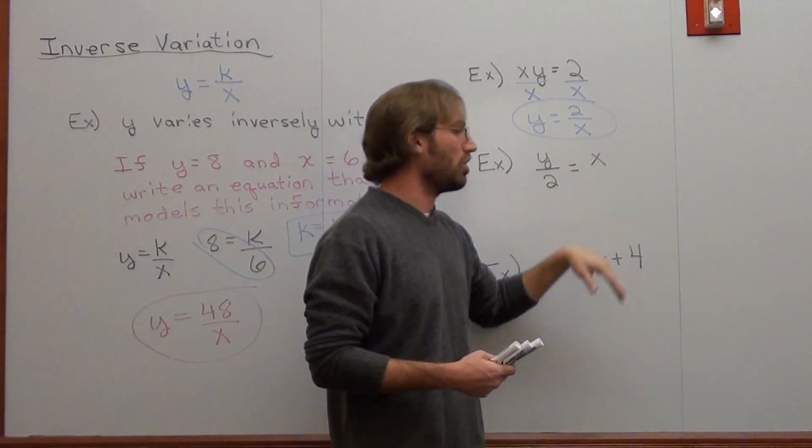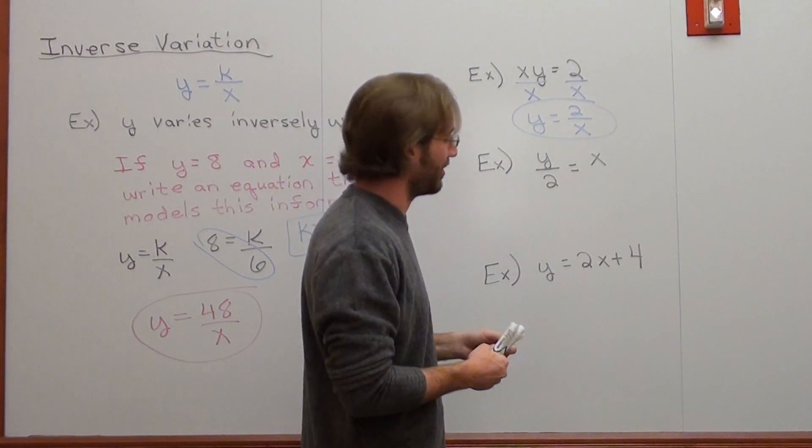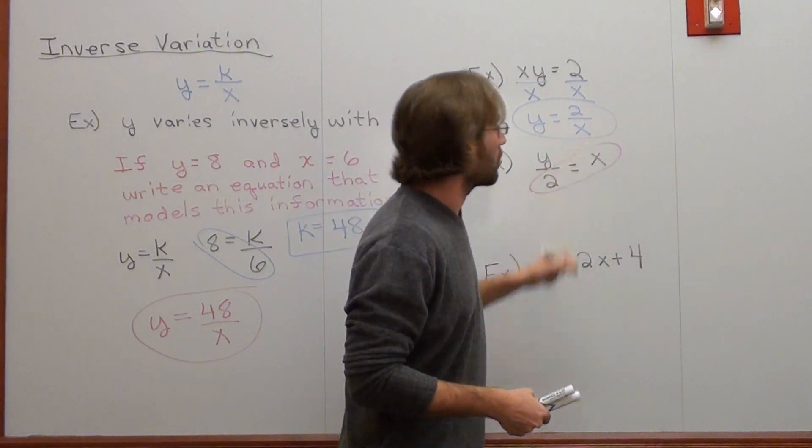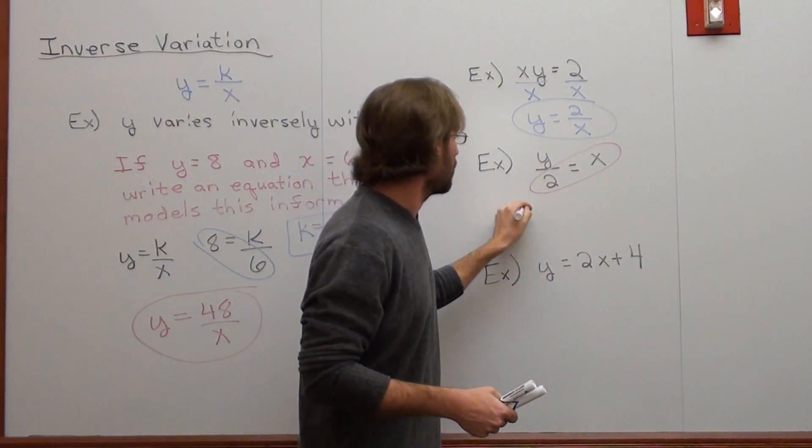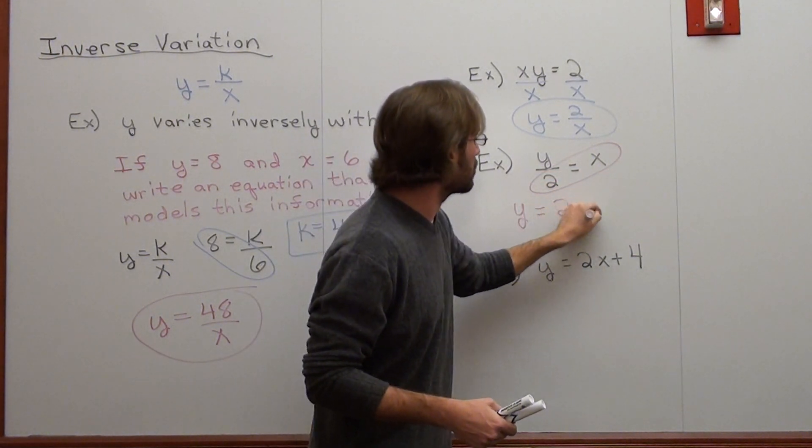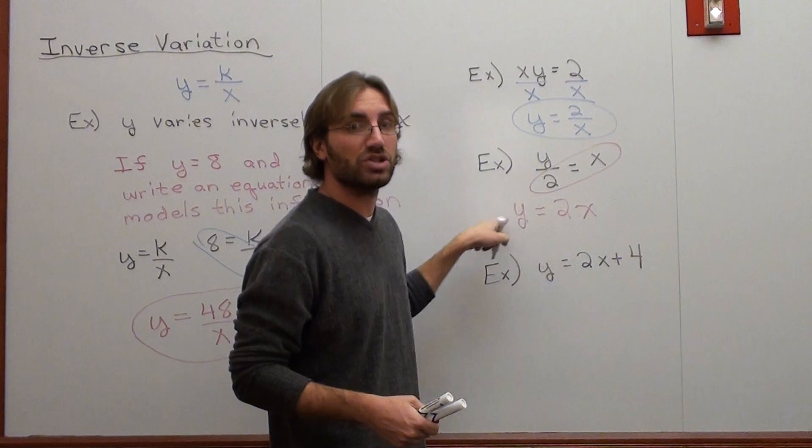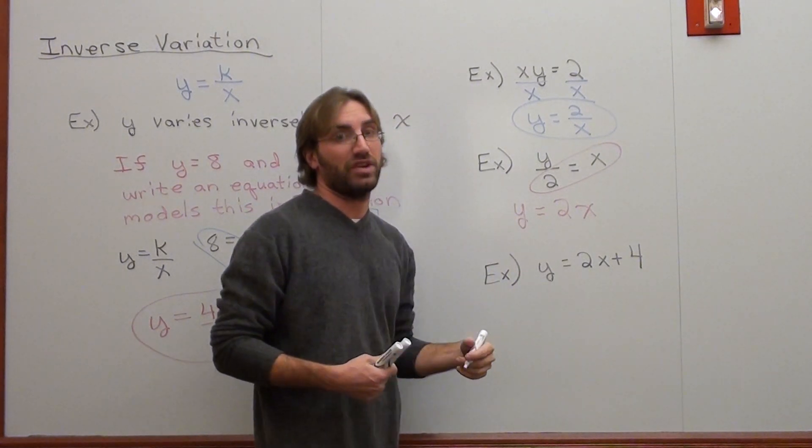Now if I try this one, students say, yeah, this one's inverse variation. No, it's not. Cross multiply. y over 2 equals x. y equals 2x. x is in the numerator and so is y. That's not an inverse variation type problem.